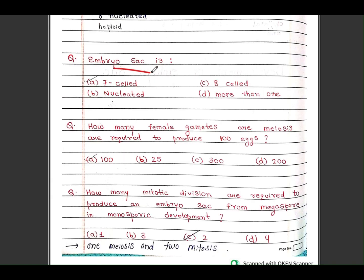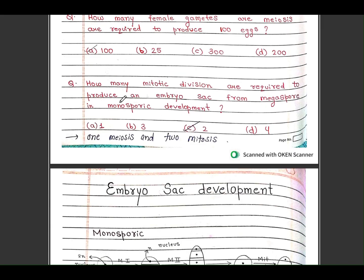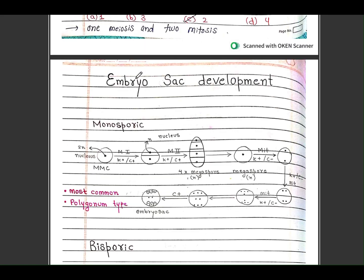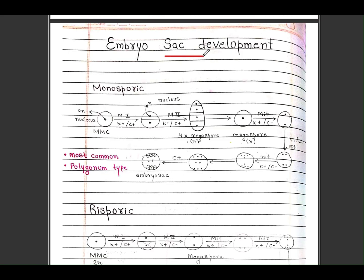Questions: embryo sac is 7-celled, 8-nucleated. More than one answer is 7-celled, 8-nucleated. A few more questions are there, read it by yourself. Embryo sac development: monosporic, bisporic, tetrasporic types exist.